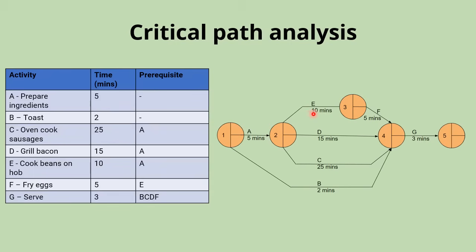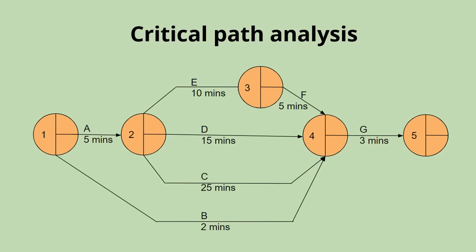We can only fry the eggs once we've cooked the beans, so we have a third node with activity E (cooking the beans) going into it and activity F (frying the eggs) coming out of it. Then we have node four, because we must have completed the eggs, the bacon, the sausages, and the toast before we can serve up. Activity G (serving) comes out of node four, and finally we finish with node five to show the end of the project.